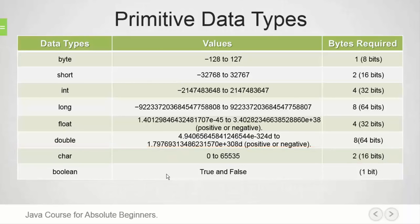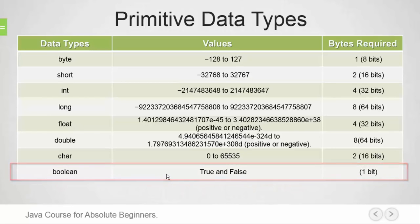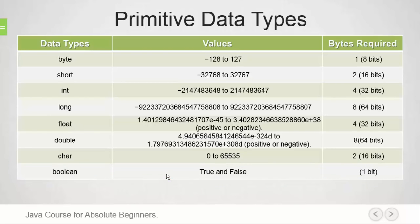The boolean type can hold only the values true or false. After you have declared a variable to be of a certain type, it can only hold that specific type of data. The primitive data type you use depends upon what the purpose of the variable will be. For example, if you wanted to store highly precise scientific calculations, you would probably want to use a double. If you were using an integer to store the day of the month, the possible values should only be 1 to 31, so you could use a byte to minimize memory use.